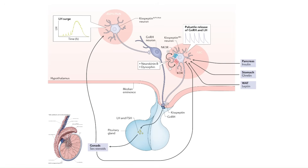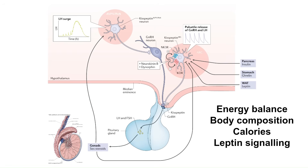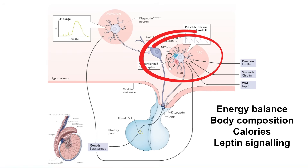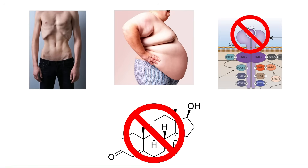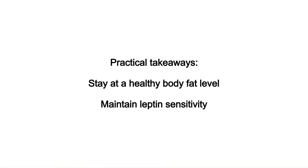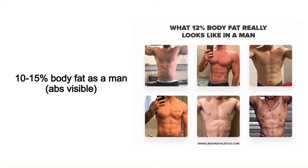Leptin is relevant here because kisspeptin neurons are influenced by leptin signaling. So any disruption to energy balance, body composition, calories, and leptin signaling is going to mess with kisspeptin and downstream GnRH, LH, and testosterone. Starvation, obesity, and leptin resistance will all screw up your testosterone production.